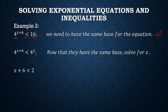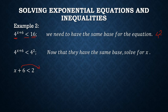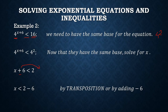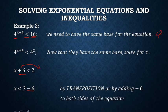By transposition, positive 6 moves to the other side and becomes negative 6. So our inequality becomes x is less than 2 minus 6, which simplifies to x is less than negative 4. That is our answer for example number 2. Remember, bases must be the same before we can eliminate them and solve the exponents.